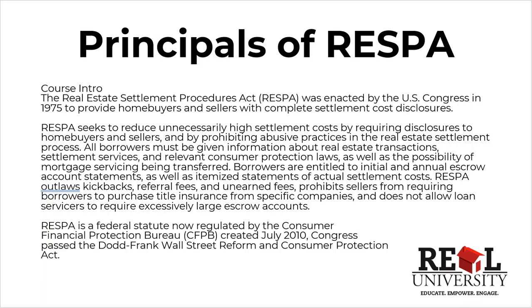RESPA has 11 sections. The three you most hear about are Section 8, which outlaws kickbacks, referrals, and unearned fees; Section 9, which deals with forcing someone to buy settlement services; and Section 10, which deals with escrow or impound accounts that can be charged to a buyer. There is also a Section 6 that deals with lenders having to disclose information, like if they're going to sell the servicing, and things of that nature.